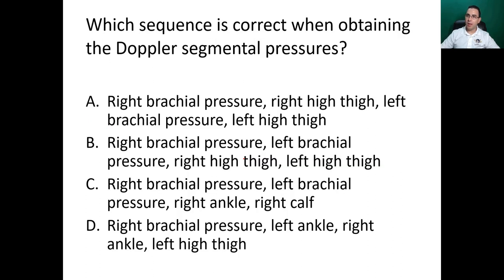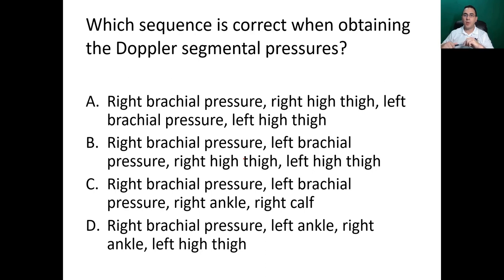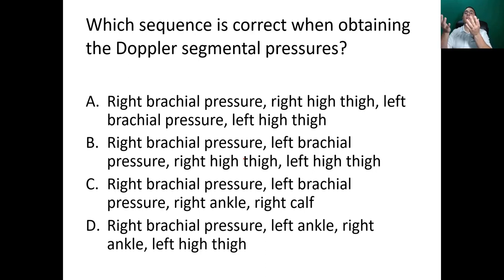Which sequence is correct when obtaining Doppler segmental pressures? A — right brachial, right high thigh, left brachial, left high thigh. B — right brachial, left brachial, right high thigh, left high thigh. C — right brachial, left brachial, right ankle, right calf. D — right brachial, left ankle, right ankle, left high thigh. Remember: obtain both brachials first, then go from distal to proximal to avoid reactive hyperemia from the previous cuff. The answer is B.